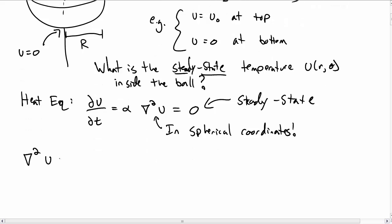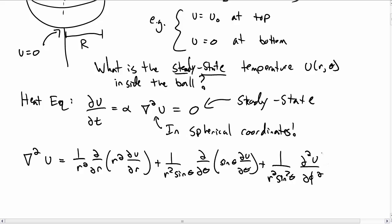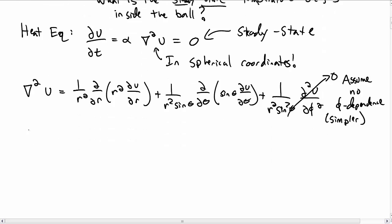The Laplacian in spherical coordinates is: (1/r²)∂/∂r(r² ∂u/∂r) + (1/(r² sinθ))∂/∂θ(sinθ ∂u/∂θ) + (1/(r² sin²θ))∂²u/∂φ². We'll get rid of the φ term by assuming there's no φ dependence. This is a simplification we make because it's simpler, and also our temperature on the boundary doesn't have any φ dependence, so we don't expect the temperature inside to either.